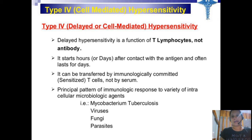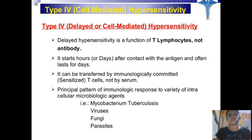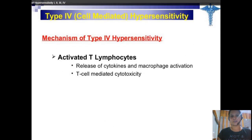Type 4 is the principal pattern of immunologic response to a variety of intracellular microbiological agents like bacteria, viruses, fungi, and parasites. The mechanism is caused by activated T lymphocytes, resulting in the release of cytokines and macrophage activation.